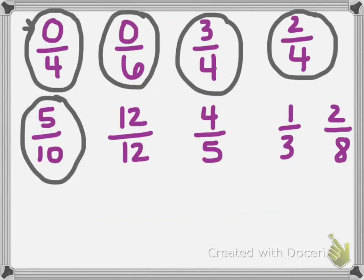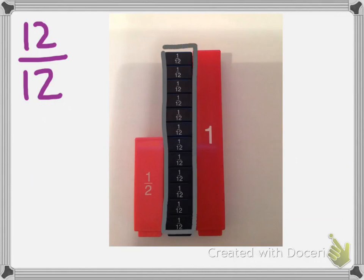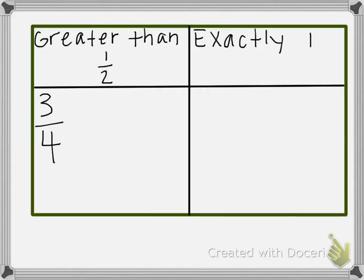Our next fraction is 12 twelfths. Here we have 12 twelfths, and we can see from the fraction towers that 12 twelfths is the same as 1 whole. So 12 twelfths is exactly 1, and we're going to put 12 twelfths in the exactly 1 column on our chart.